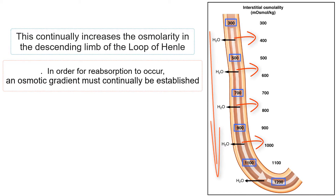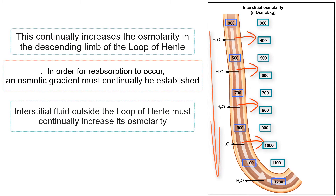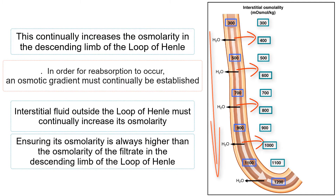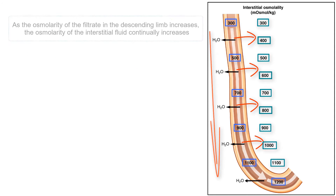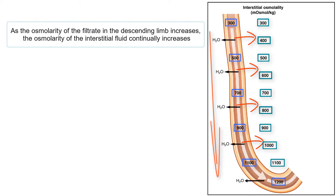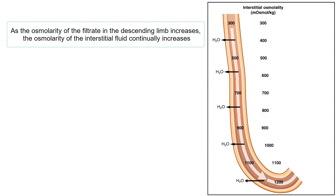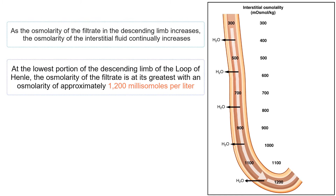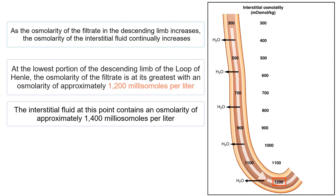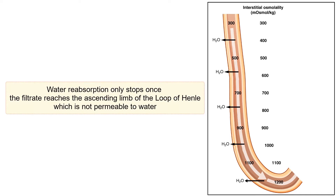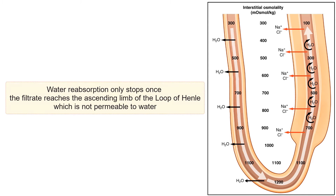In order for reabsorption to continue, an osmotic gradient must continually be established. This means the interstitial fluid outside the loop of Henle must continually increase its osmolarity, ensuring it is always higher than the osmolarity of the filtrate in the descending limb. As the osmolarity of the filtrate in the descending limb increases, the osmolarity of the interstitial fluid continually increases, until finally, at the lowest portion of the descending limb, the osmolarity of the filtrate reaches approximately 1,200 milliosmoles per liter. The interstitial fluid at this point contains an osmolarity of approximately 1,400 milliosmoles per liter. By keeping up with these changes, water is able to be reabsorbed all along the descending limb, stopping only once the filtrate reaches the ascending limb, which is not permeable to water.